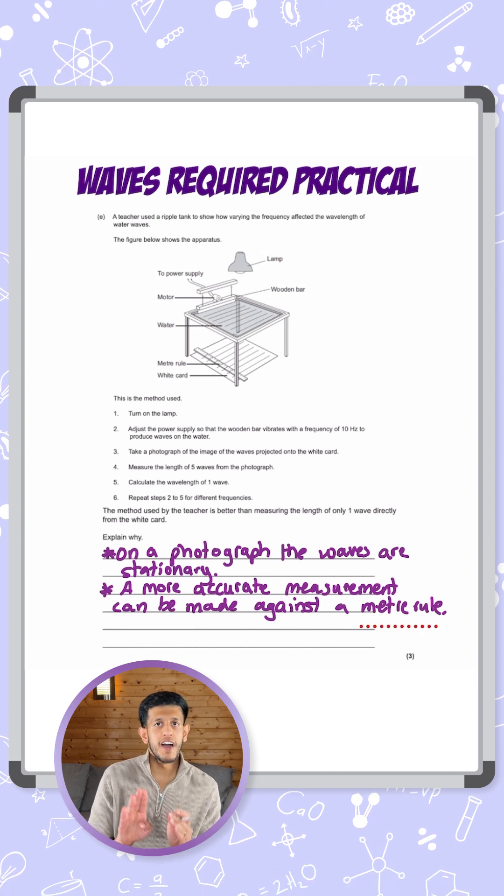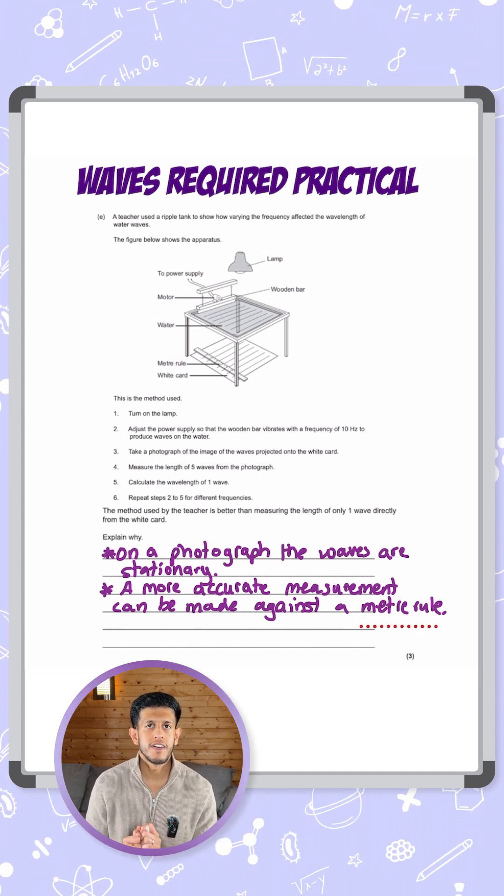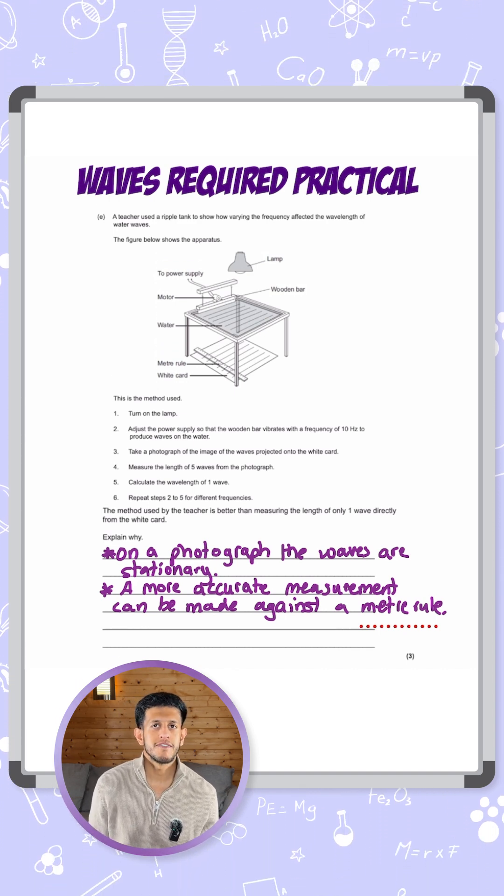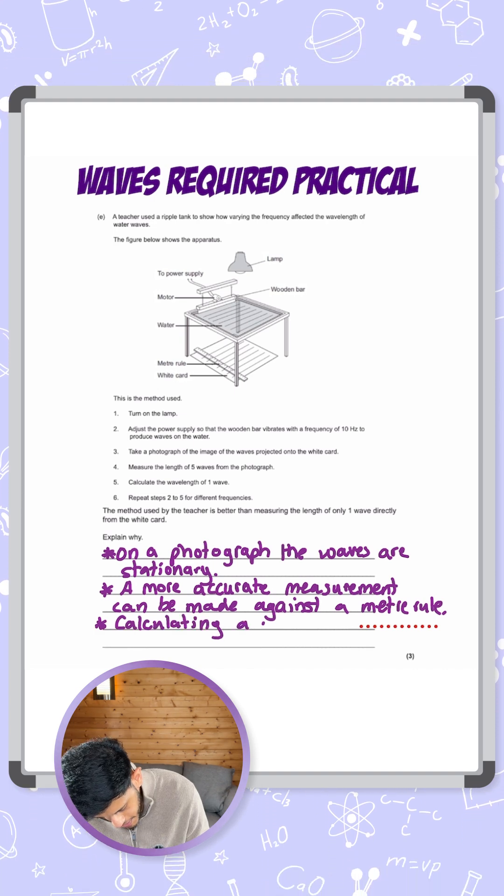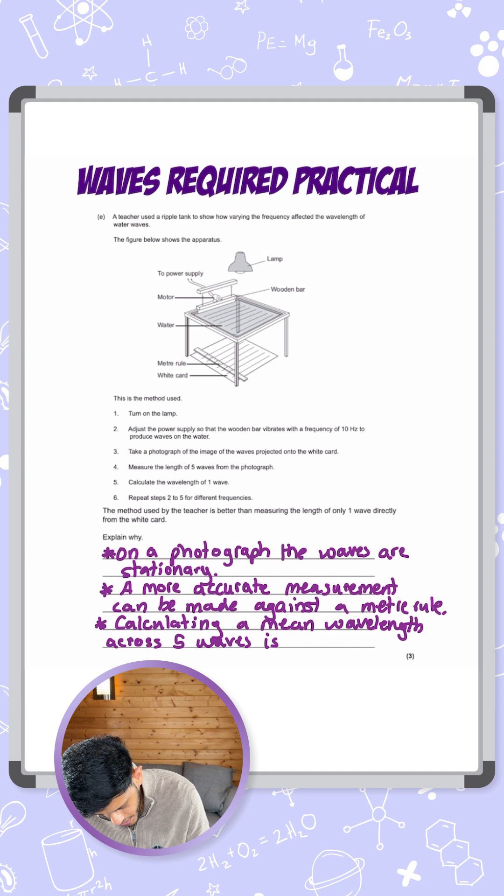It's easier to measure five waves as opposed to just one - there's less room for error with one wave, so five waves makes it more accurate. And lastly, measuring across five waves and calculating a mean is more accurate. So I'll put here: calculating a mean wavelength across five waves is more accurate.